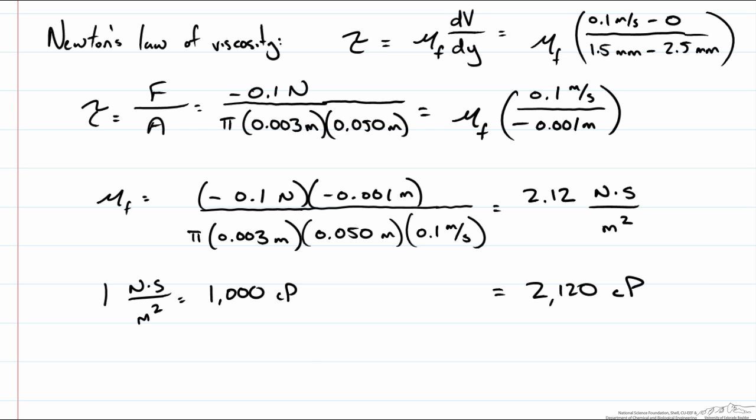To give you an idea water at 20 degrees Celsius has a viscosity of 1 centipoise. Honey might be somewhere around 10,000 centipoise. So this viscosity of the unknown fluid is somewhere between water and honey.